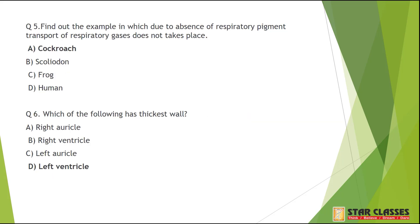Question number 5: Find out the example in which, due to absence of respiratory pigment, transport of respiratory gases does not take place. The answer is very clearly — cockroach.